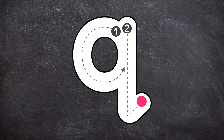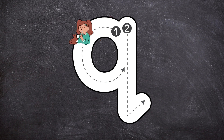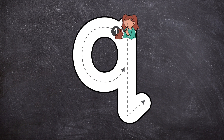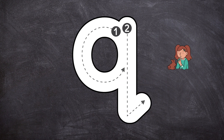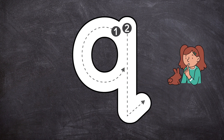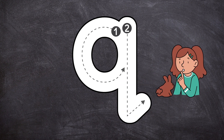Start at the top, curve around and down to the middle, go back to the top, straight down and up. Q — quiet.